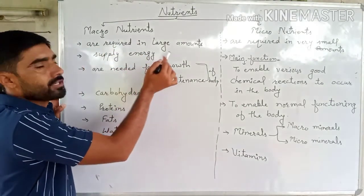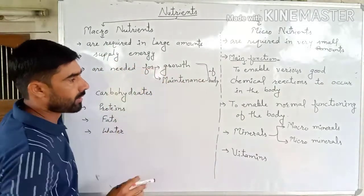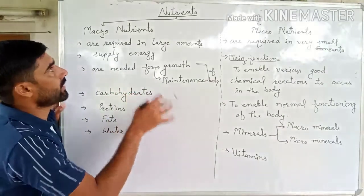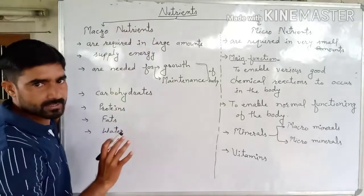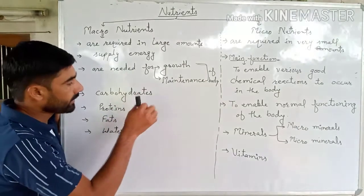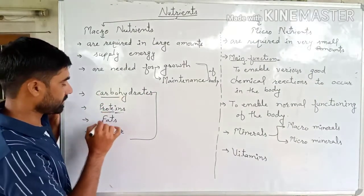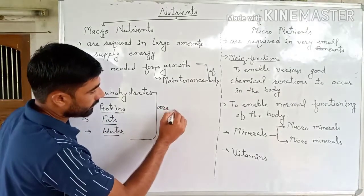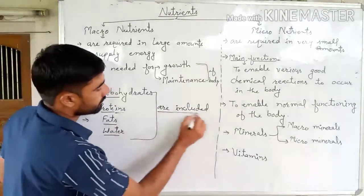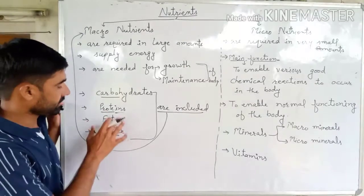Macronutrients supply energy to the human body. Macronutrients are needed for growth and maintenance of the body. For energy, growth, and maintenance, macronutrients are needed. Carbohydrates, proteins, fats, and water are included in macronutrients.